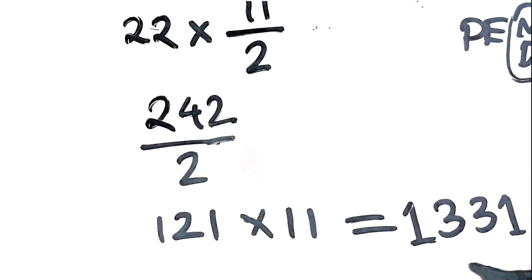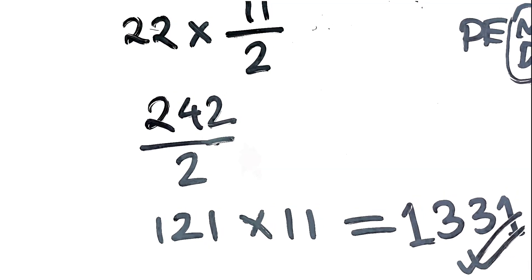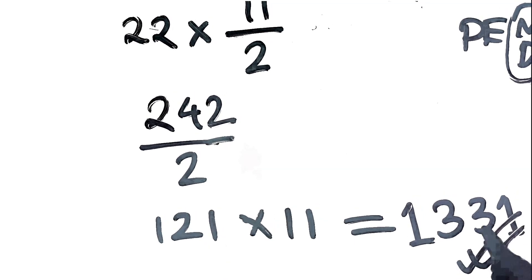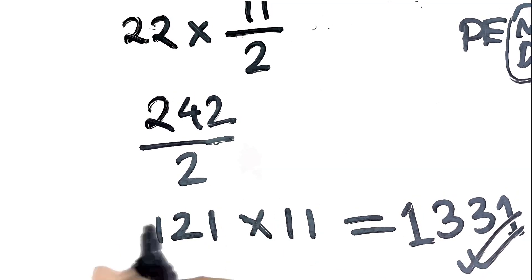So 121 times 11 equals 1331. Yep, that's the real answer. Not 11, but 1331.